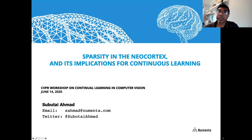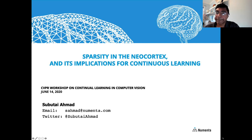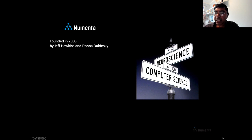I wish we could be there in person and meet, but unfortunately not. My talk today is going to be somewhat unusual in that I'm going to discuss how neuroscience can help us design better continuous learning systems. In particular, I'm going to focus on sparsity and sparsity in the neocortex and its implications for continuous learning. But first, let me tell you a little bit about Numenta.